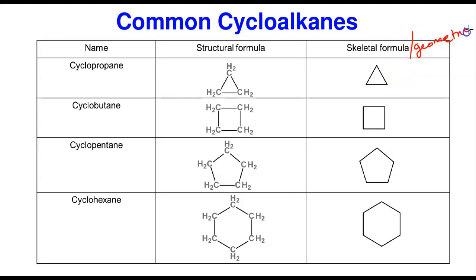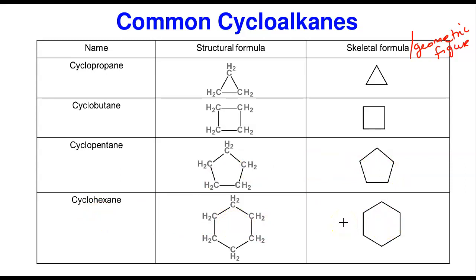Some textbooks may still include the '1' prefix, and in exams I grade both forms as correct. But there's no need to put it since we know it's already at carbon one. When there are two or more attachments, however, you must specify the numbering for both attachments. The skeletal geometric figures are: cyclopropane is a triangle, cyclobutane is a square, cyclopentane is a pentagon, cyclohexane is a hexagon.